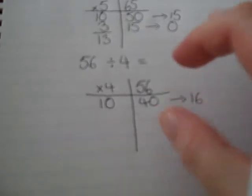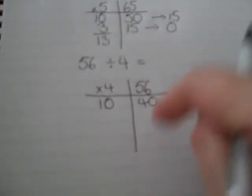How many 4s are there in 16? Well, you either know it, or you can work it out by counting in your multiples. 4, 8, 12, 16. That's 4.